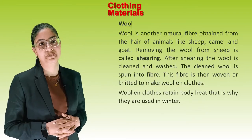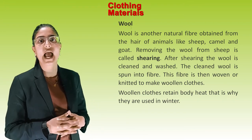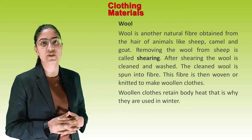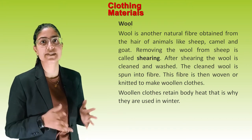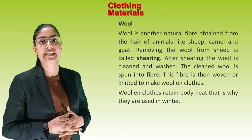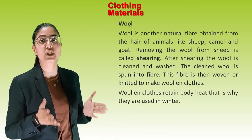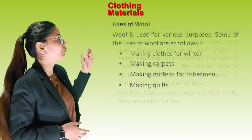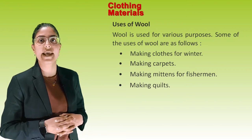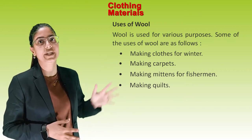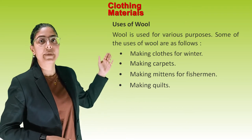Wool: Wool is another natural fibre obtained from the hair of animals like sheep, camel and goat. Removing the wool from sheep is called shearing. After shearing, the wool is cleaned and washed. The clean wool is spun into fibre, which is then woven or knitted to make woollen clothes. Woollen clothes retain body heat, which is why they are used in winter. Uses of wool include making winter clothes, carpets, mittens for fishermen, and quilts.